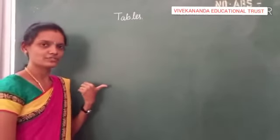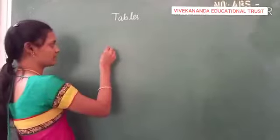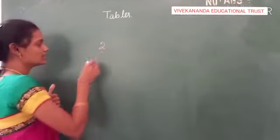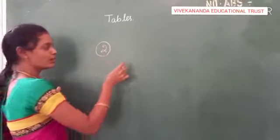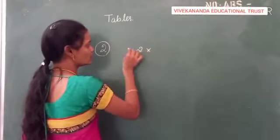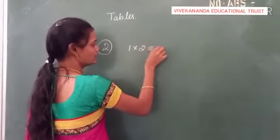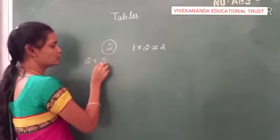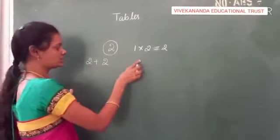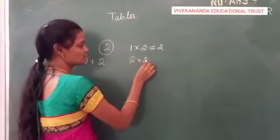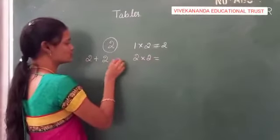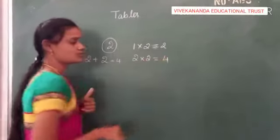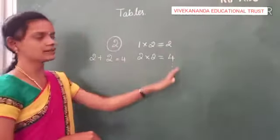Children write the tables usually. For example if I write 2 tables, if there is only 1 two, I would say 1 times 2 is equal to 2 because only 2 is there. If I add 2 twos, then how can I write the multiplication fact for this? Then 2 times 2 is 2 plus 2 is 4. So this is how we can write the tables.